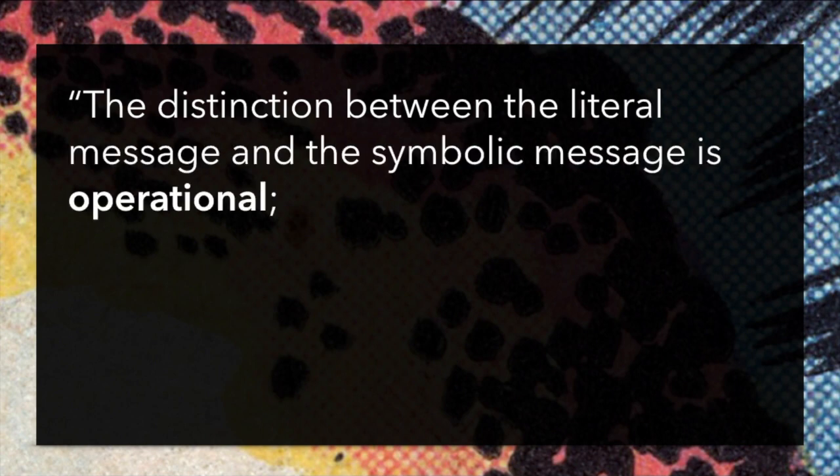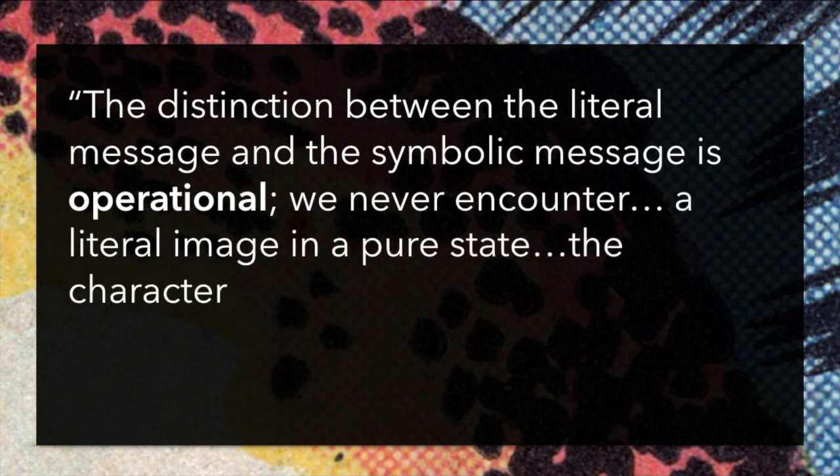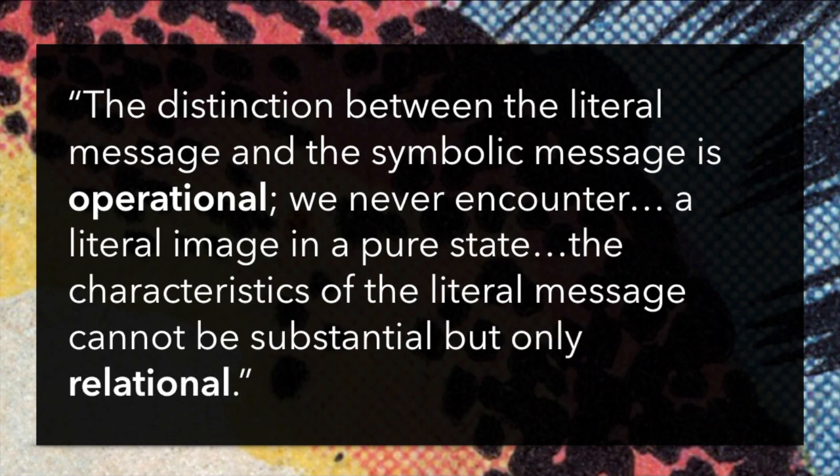There's always more meaning possible in an image than we can ever know — an image might mean something completely different in the future, something we can't even imagine yet, and we have to allow for that meaning to exist. Now, denoted and connoted messages work together. As Barthes says, the distinction between the literal message and the symbolic message is operational — we never encounter a literal image in a pure state. Because both messages exist simultaneously in the same dataset, the image, we receive these messages simultaneously. We only understand the connoted message in terms of the denoted message, and vice versa. In fact, in practice, we often receive the connoted message first, and sort of work backwards, reconstructing the denoted message that led us to our interpretation after the fact.